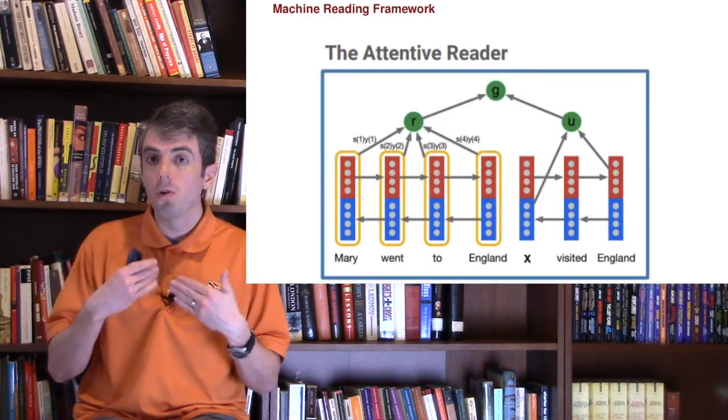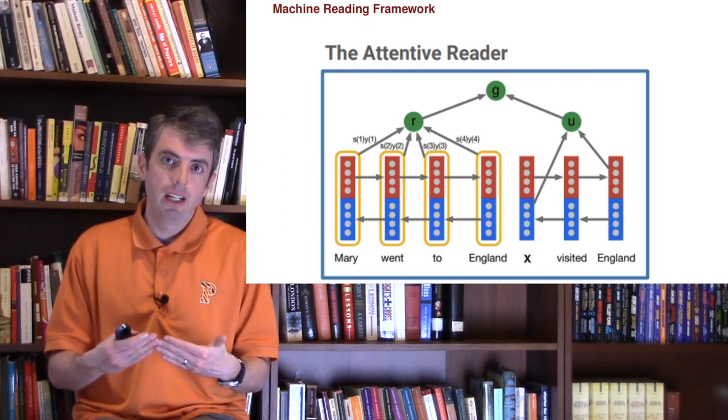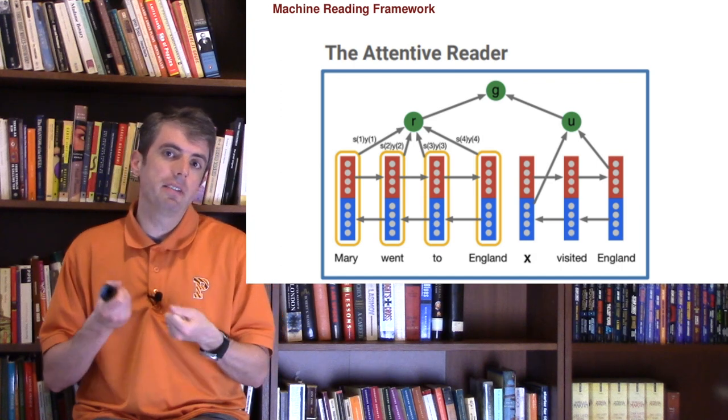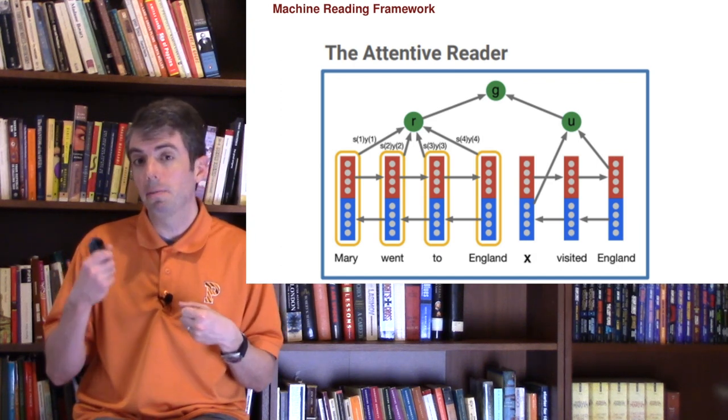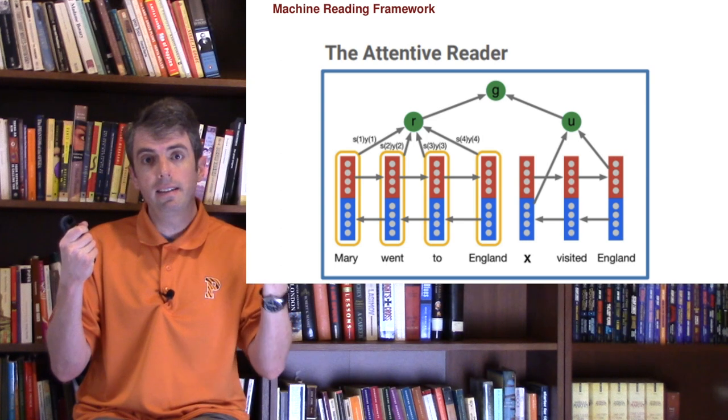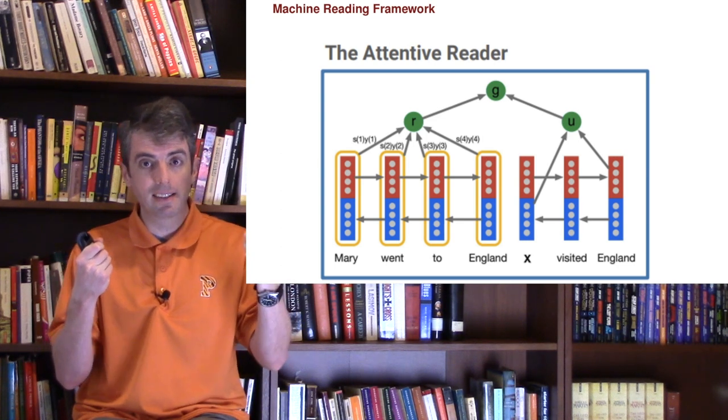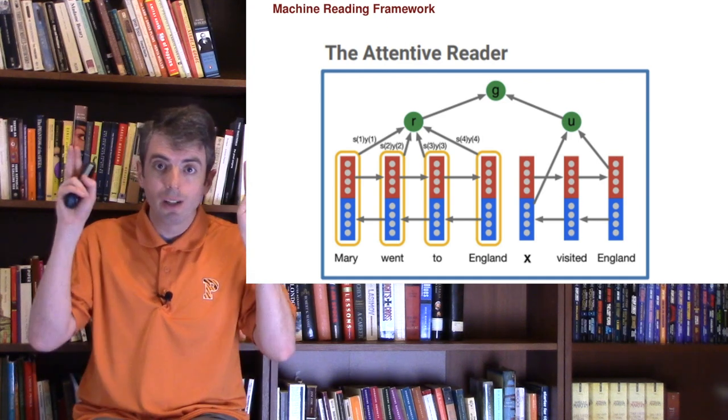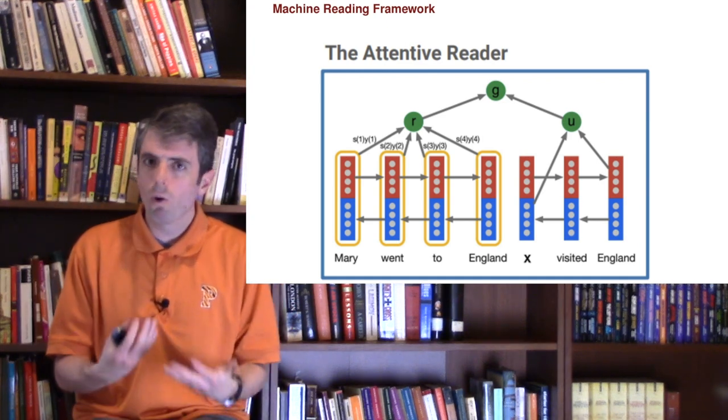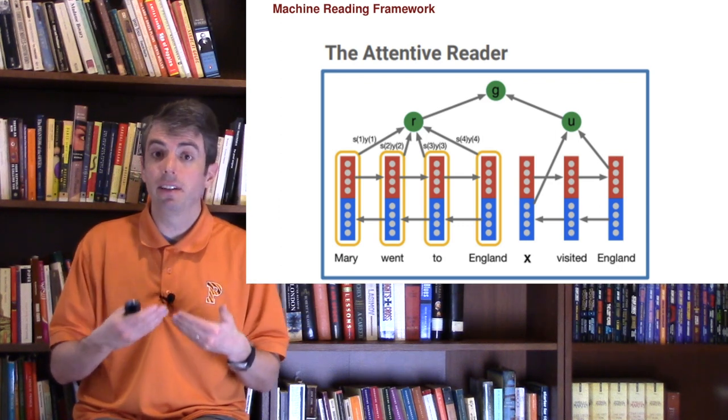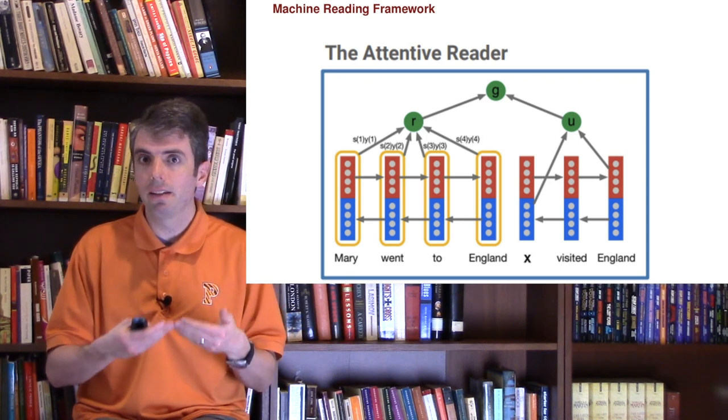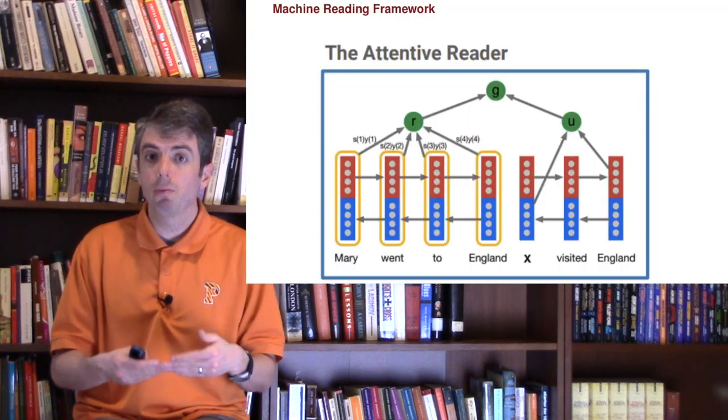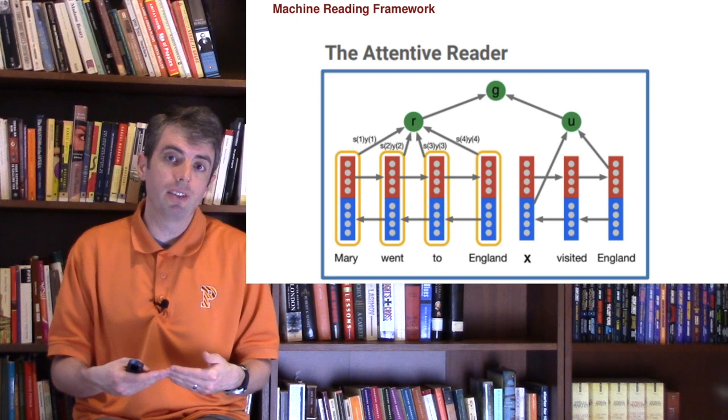We'll talk more about the specific models in the next video, but for the moment, think about the kinds of things that your model would need to do. It needs to have a representation of the question, and it needs to have a representation of the text that it's reading, and it needs to be able to find the relevant pieces of text to be able to read it. And of course, when a machine reads a piece of text, it's not doing the same high-level processing and reading that we're doing. And so even though it's not going to do that, we are going to evaluate it based on whether it gets the question right.